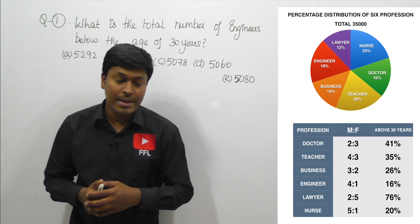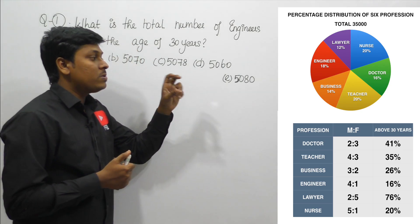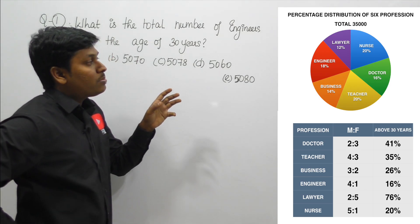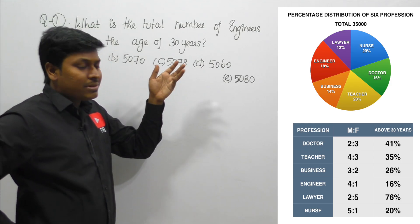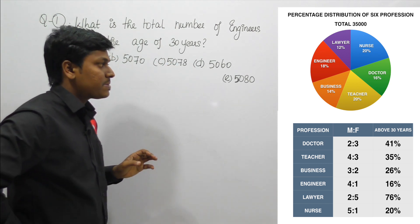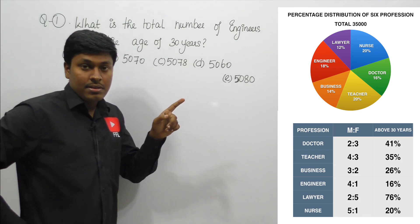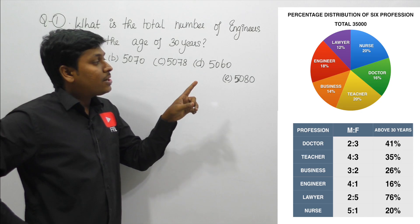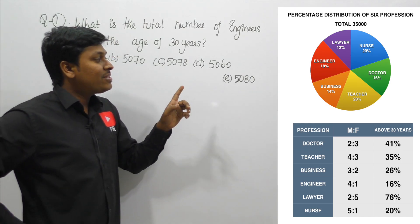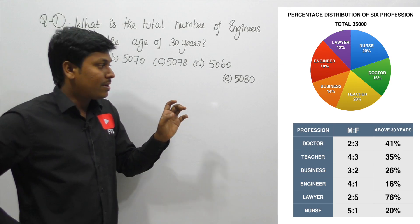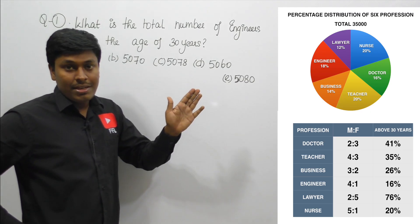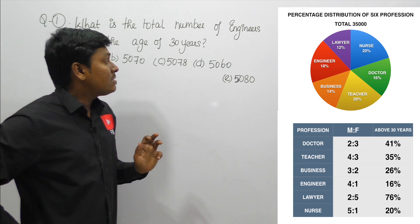Let me move on to DI number 12. Here they have given a pie chart and also a table chart. At the top, the pie chart talks about the percentage distribution of six different professions — nurse, doctor, teacher, business, and others — all values given in percentage, with a total of 35,000 people. In the table chart, the second column gives male and female ratios, and the last column gives the percentage of people above 30 years for each profession.